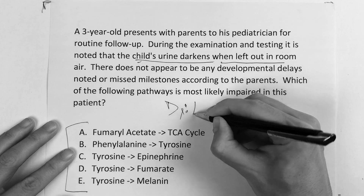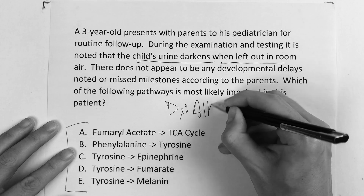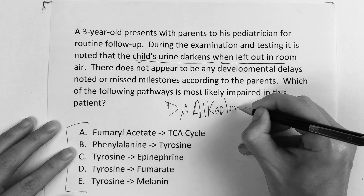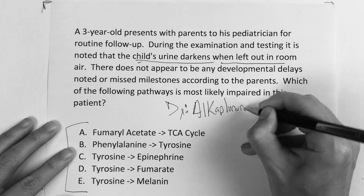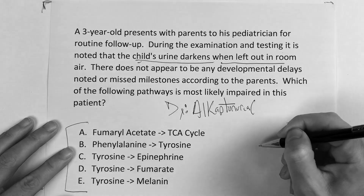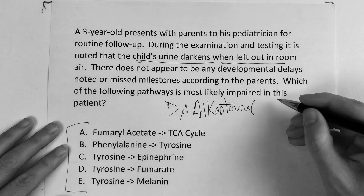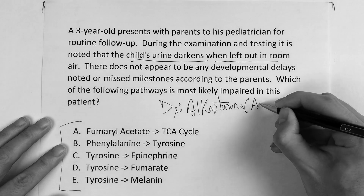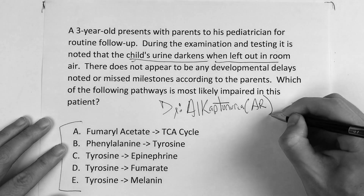What are you thinking? Alkaptonuria. Alkaptonuria, okay? What's its inheritance pattern? We learned last time — autosomal recessive.